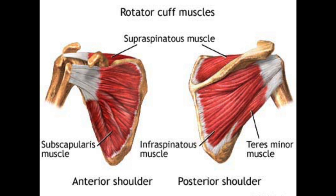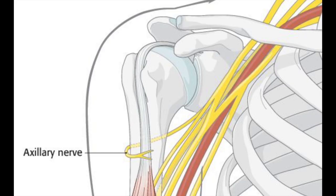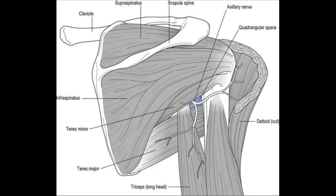You can remember the rotator cuff muscles by the mnemonic SITS: S stands for supraspinatus, I stands for infraspinatus, T stands for teres minor, and the second S stands for subscapularis. Finally, you have the axillary nerve, which innervates the deltoid and the teres minor muscles, and it is the most common nerve injured in anterior shoulder dislocations.